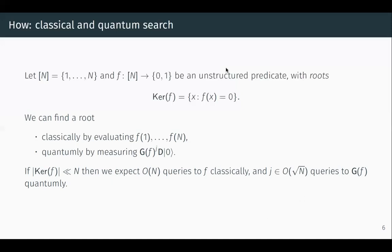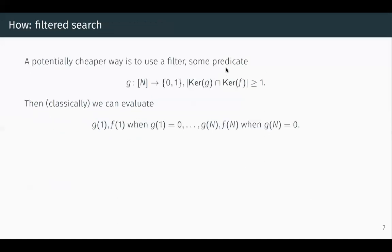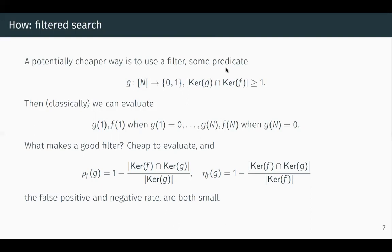Staying in the classical world a little longer: if f is very expensive, we might like to filter the calls we make to f. To do this, we define a second predicate — a filter g — with the same domain and codomain, demanding it has at least one root in common with f. Classically, we could evaluate g first, and only evaluate f if we've hit a root of g. This is not always a good idea, depending on the exact properties of g. In particular, if g is cheap to evaluate and certainly cheaper than f, and if the false positive and false negative rates are small, this points to it being a good filter.